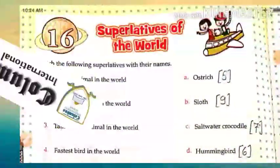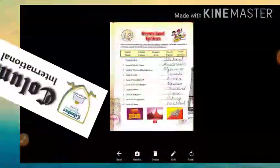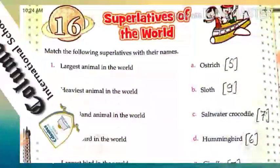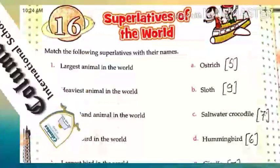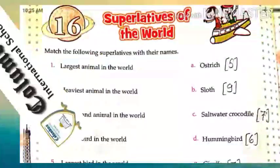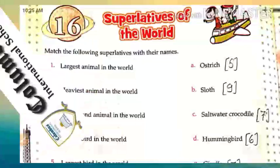I hope you all have understood these two chapters — firstly, International Epithets, and second, Superlatives of the World. If you haven't completed the chapter yet, start to complete it with this worksheet today, and revise the chapters also for your half-yearly exam. I hope you all are doing revision very well. Keep your revision work going continuously. Next day we will revise the next chapter. Till then, friends, thank you. Have a good day.